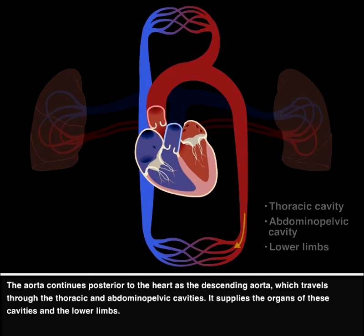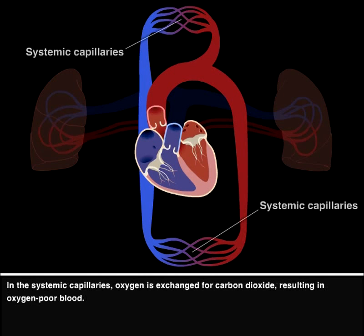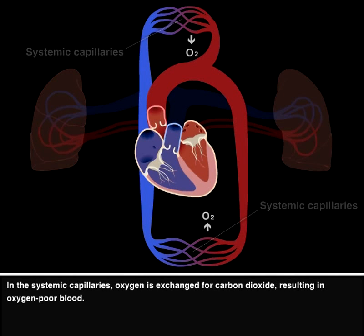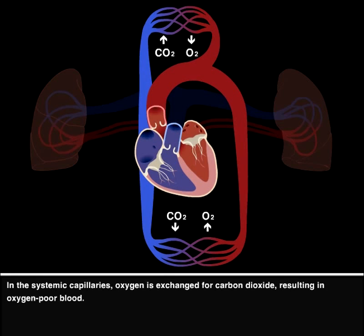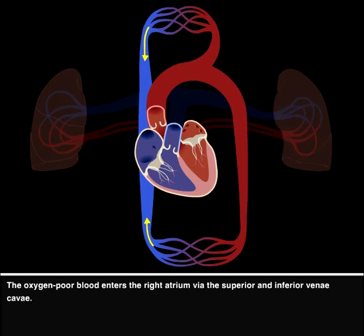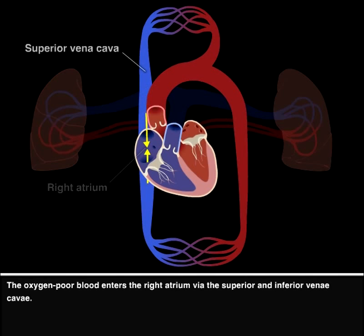In the systemic capillaries, oxygen is exchanged for carbon dioxide, resulting in oxygen-poor blood. The oxygen-poor blood enters the right atrium via the superior and inferior venae cavae.